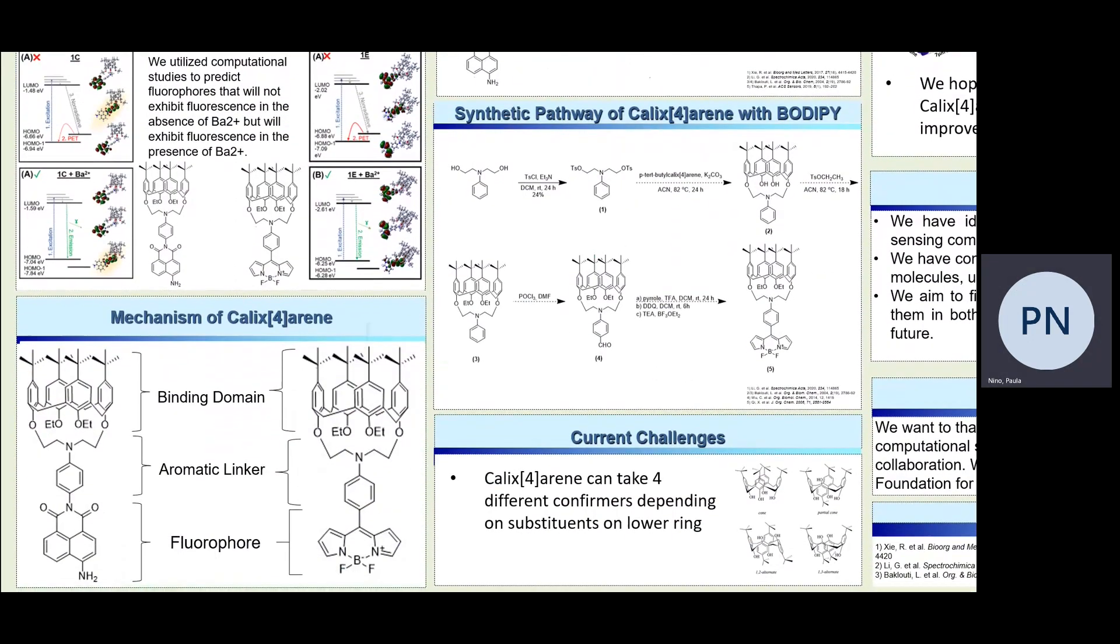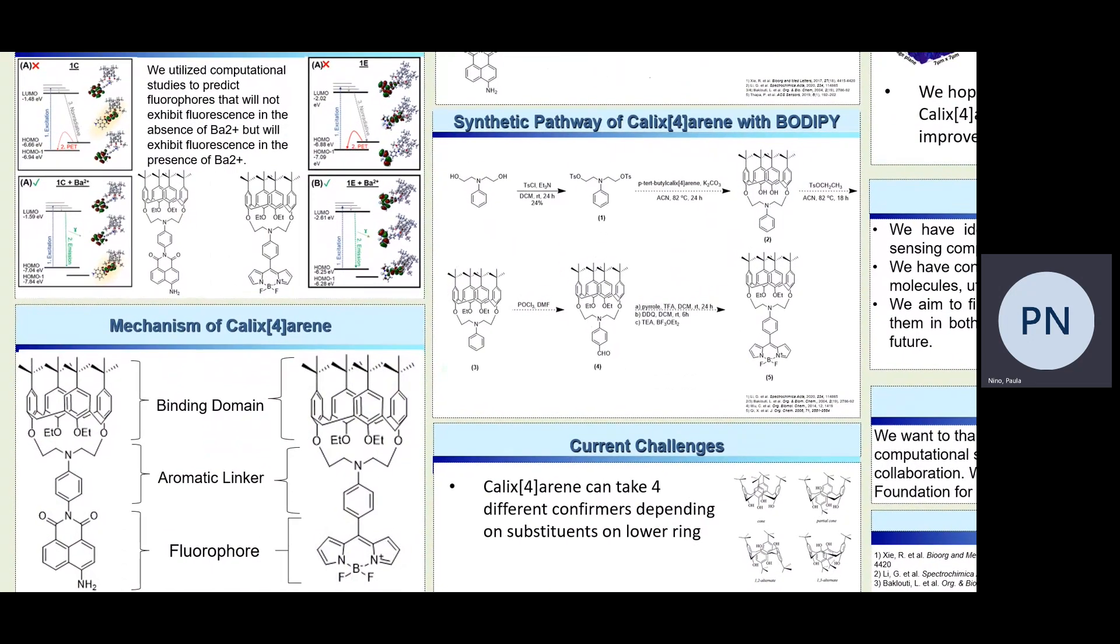To look more in depth into the mechanism of the calixarene, we see that there are three key structures which include the binding domain, the aromatic linker, and the fluorophore. Both structures differ in that one uses naphthalamide while the other uses BODIPY as a fluorophore. They essentially behave similarly in that they are able to fluoresce in the region we want them to and are able to attach to the slides. They are just structurally different.